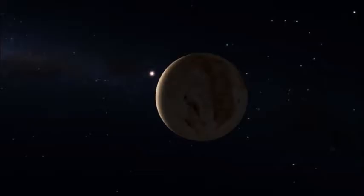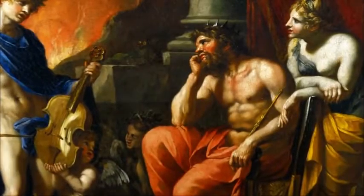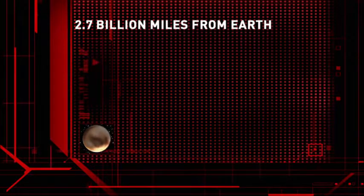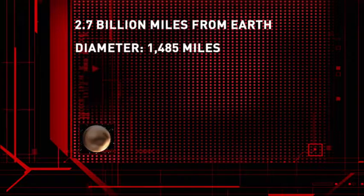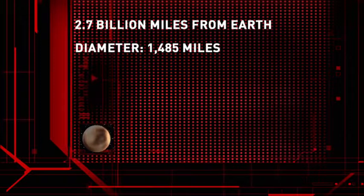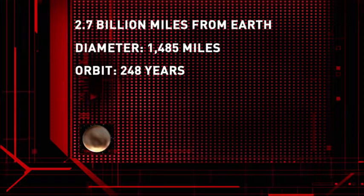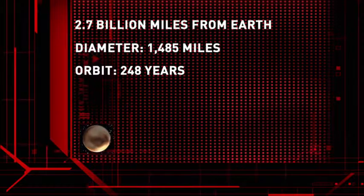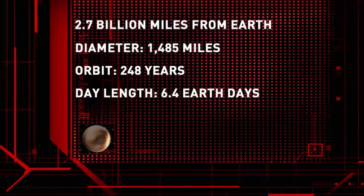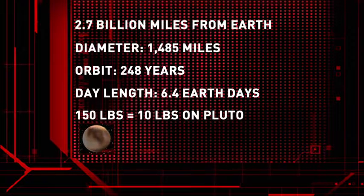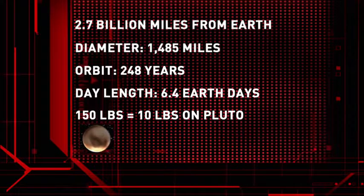Because of its great distance from the sun, Pluto takes its name from the Roman god of the underworld. At its closest, Pluto is 2.7 billion miles from Earth. Its diameter is 1,485 miles, half the width of the United States. It takes 248 earth years for Pluto to orbit the sun, and a day on the planet is equivalent to about six and a half earth days. A 150-pound earthling would weigh only 10 pounds on Pluto.